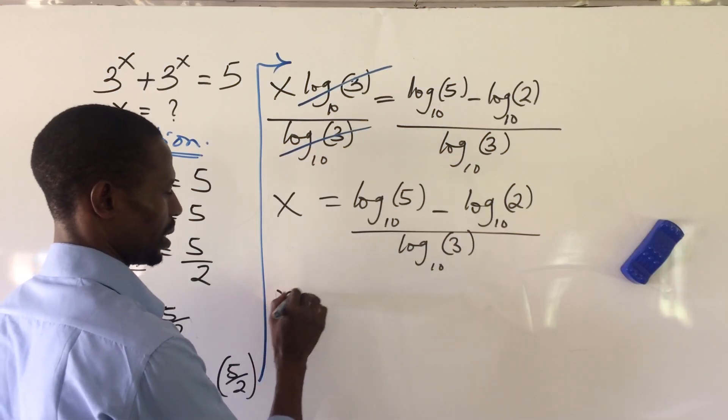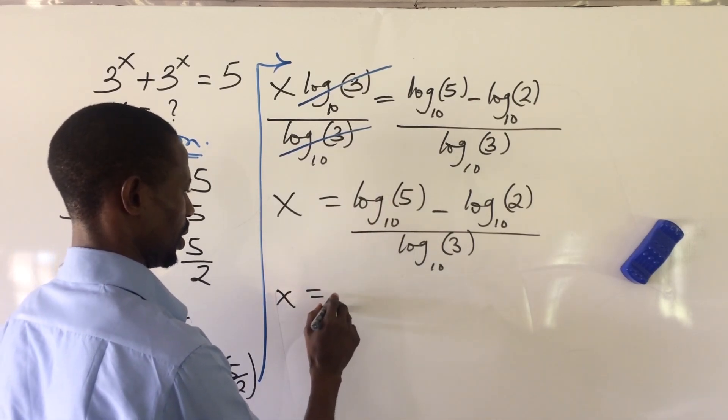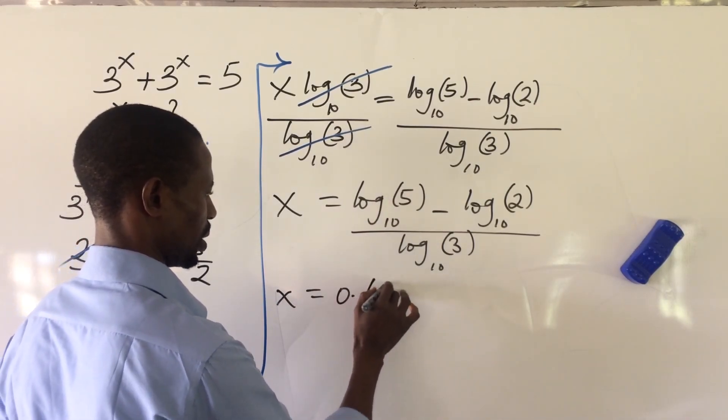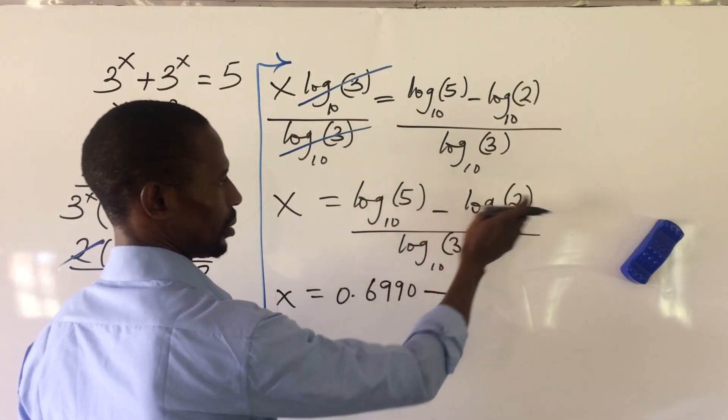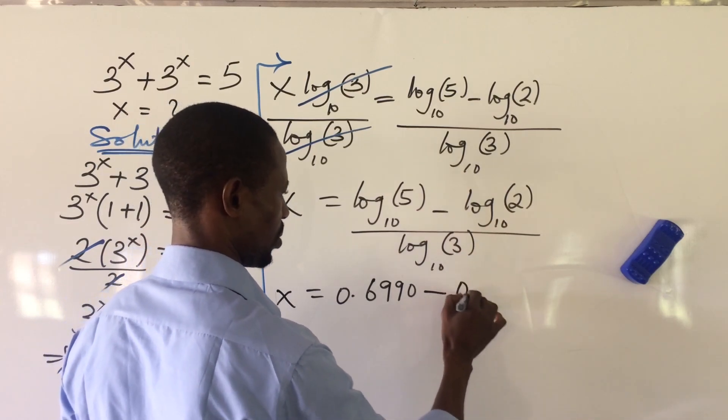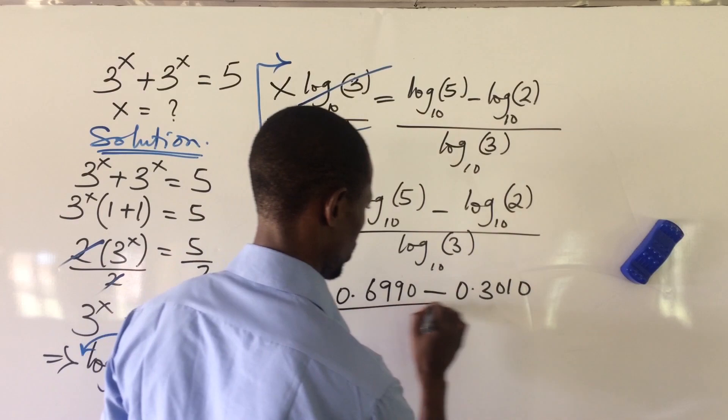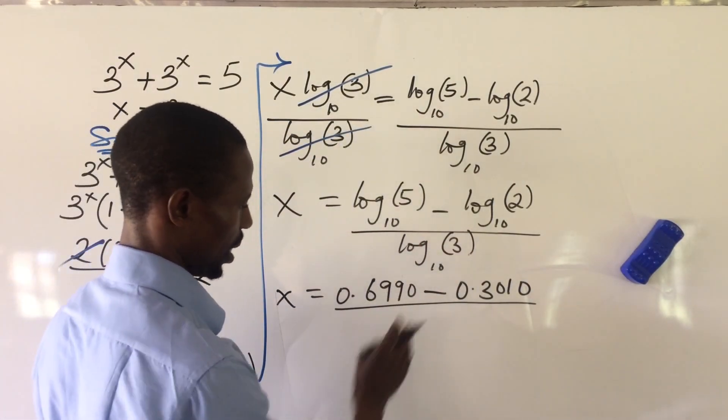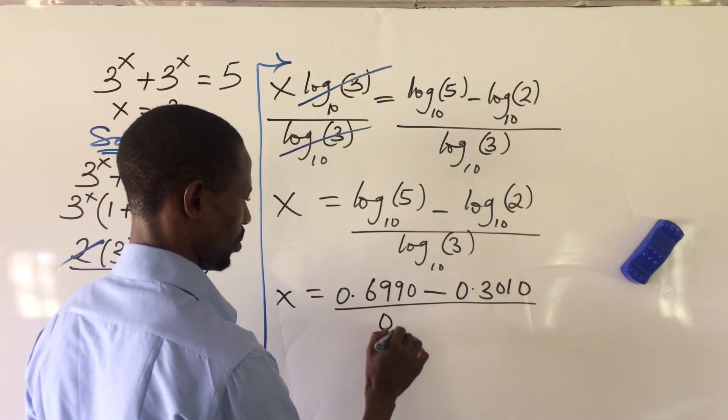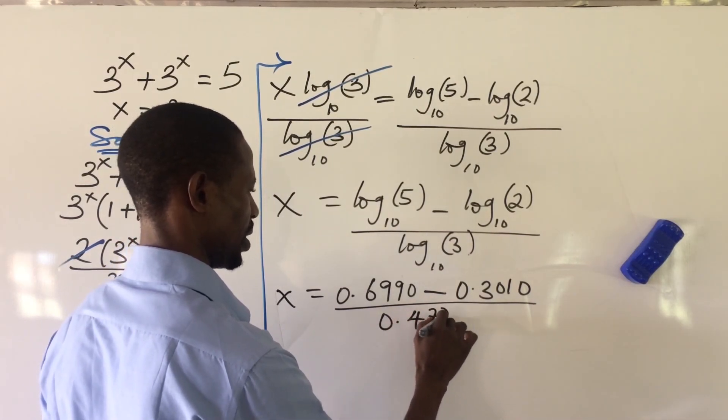From here, we have x equal to the log of 5 base 10 from our calculator gives us 0.6990 minus, which is our minus sign, log 2 base 10 gives us 0.3010, all over log 3 base 10 gives us 0.4771.